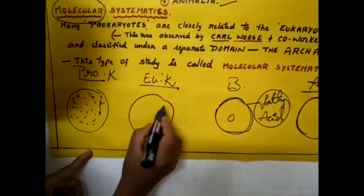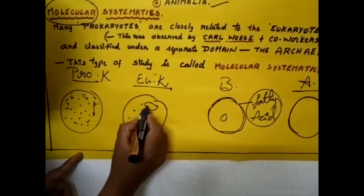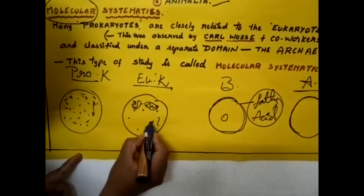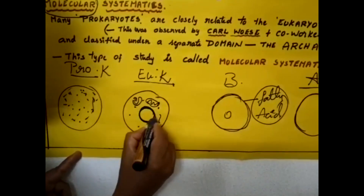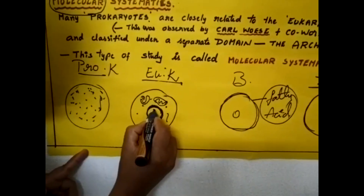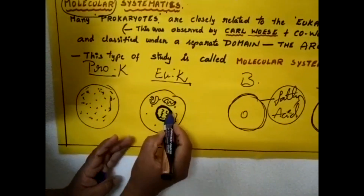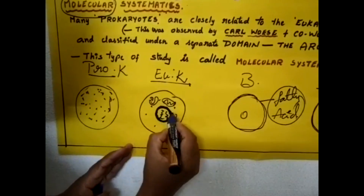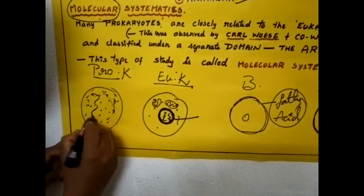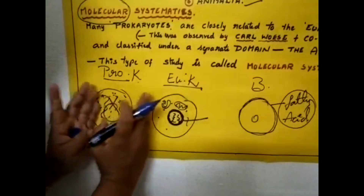But in eukaryotes, there is a cytoplasm in which mitochondria and the Golgi complex are all present outside the nucleus. There is a membrane present, and inside that inner membrane, DNA is present. There is a separated membrane inside — surrounded by the nucleus — this type of structure is present in eukaryotes. There is no nuclear membrane in prokaryotes; this is the difference between these two.